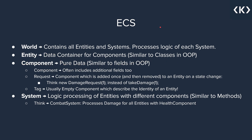Next, we have components — those are pure data. They come in a couple of different flavors. We can have normal components, which often include additional fields, such as a health component with an integer health value. We then have request components, which are added once and then removed from an entity on a state change — for example, a damage request that we attach to an entity instead of calling a take damage method. There are also tags, which are usually empty components that just describe the identity of an entity. Finally, we have systems — the logic processing of entities with different components — for example, a combat system which processes damage for all entities with health components.